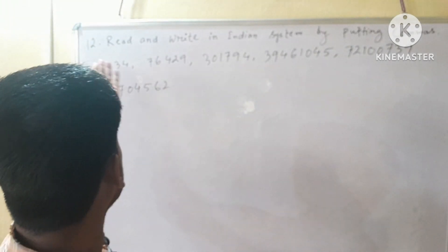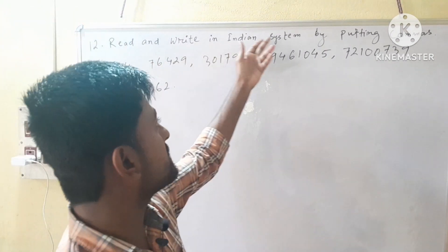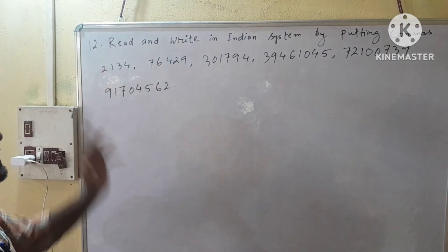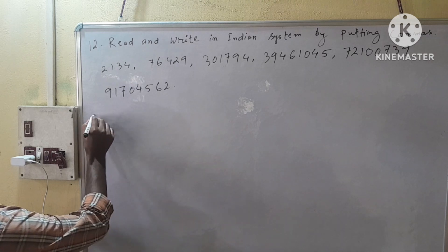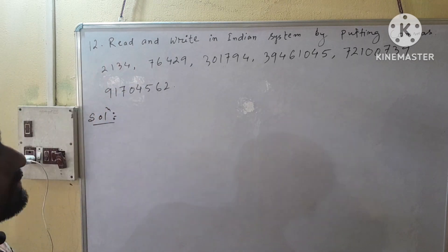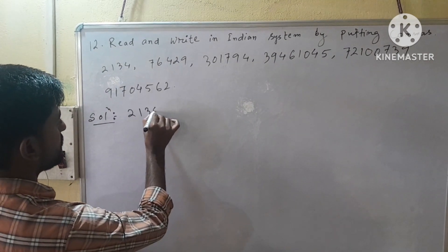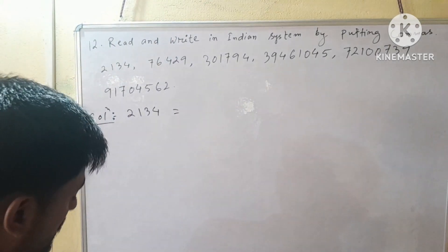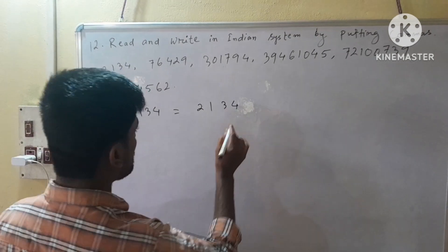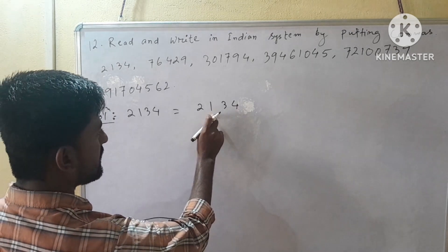Our next question is question number 12. Question says: read and write in Indian system by putting commas. That is one of the very very important questions for your examination. In the Indian system we put the first comma after 3 digits from the right side: 1's place, 10's place, 100's place.